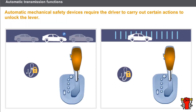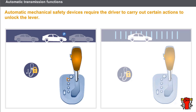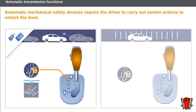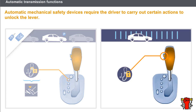Automatic mechanical safety devices require the driver to carry out certain actions to unlock the lever. The shift lock function automatically locks the lever in the Park position. This safety system requires the ignition to be switched on and the brake pedal to be depressed before the lever can be moved. In addition, a mechanical safety catch on the lever prevents incorrect selection of any position — the button on the gear lever unlocks this safety device.